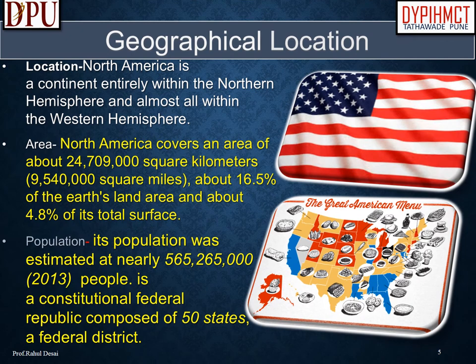North America is a continent entirely within the Northern Hemisphere and almost all within the Western Hemisphere. It covers an area of about 24,709,000 square kilometers (9,540,000 square miles), about 16.5% of the Earth's land area and about 4.8% of its total surface. Its population was estimated at nearly 565,265,000 in 2013. The United States is a constitutional federal republic composed of 50 states and a federal district.